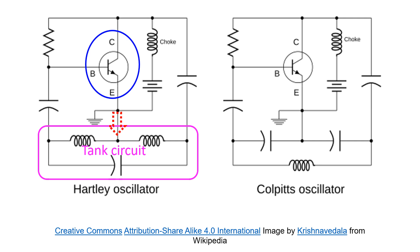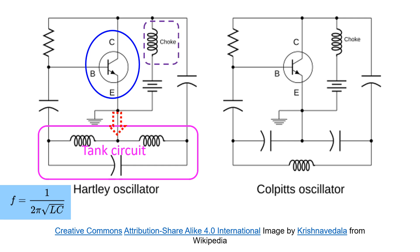The frequency of oscillation is the resonant frequency of the tank circuit. If the capacitance of the tank capacitor is C and the total inductance of the coils is L, then frequency f equals 1 divided by 2π times the square root of LC. It is therefore possible to change the frequency of oscillation simply by using a variable capacitor. The function of the radio frequency choke is to prevent the RF energy set up in L from being short-circuited through the battery.